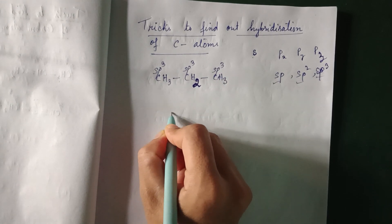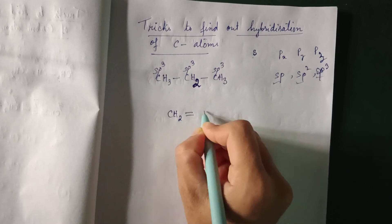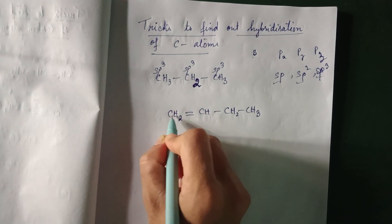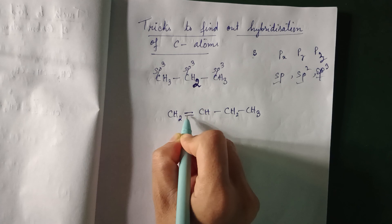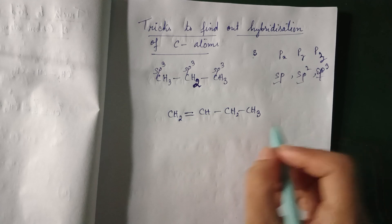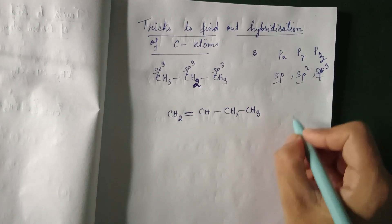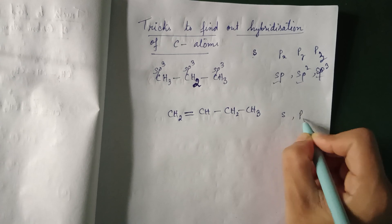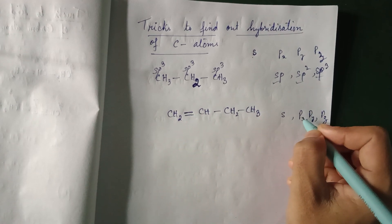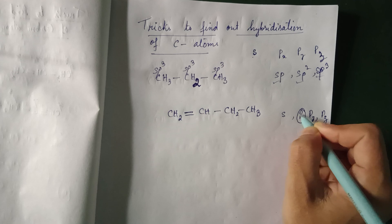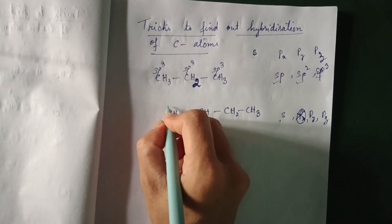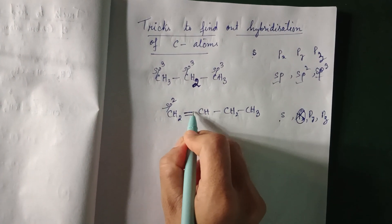Now let us consider another compound: CH2 double bond CH-CH2-CH3. This carbon is now double bonded. Whenever a carbon is double bonded, one bond is a sigma bond and the other is a pi bond. A pi bond means one p orbital is utilized. We have one s and three p orbitals; one p is used for the pi bond, so two p orbitals remain. Therefore this carbon is sp2 hybridized.